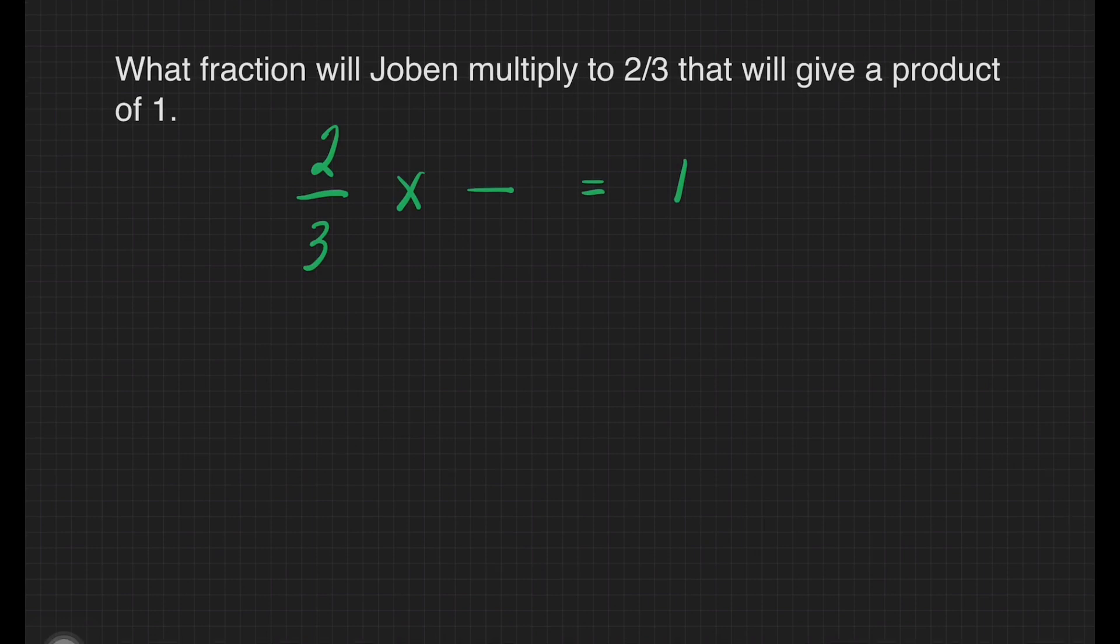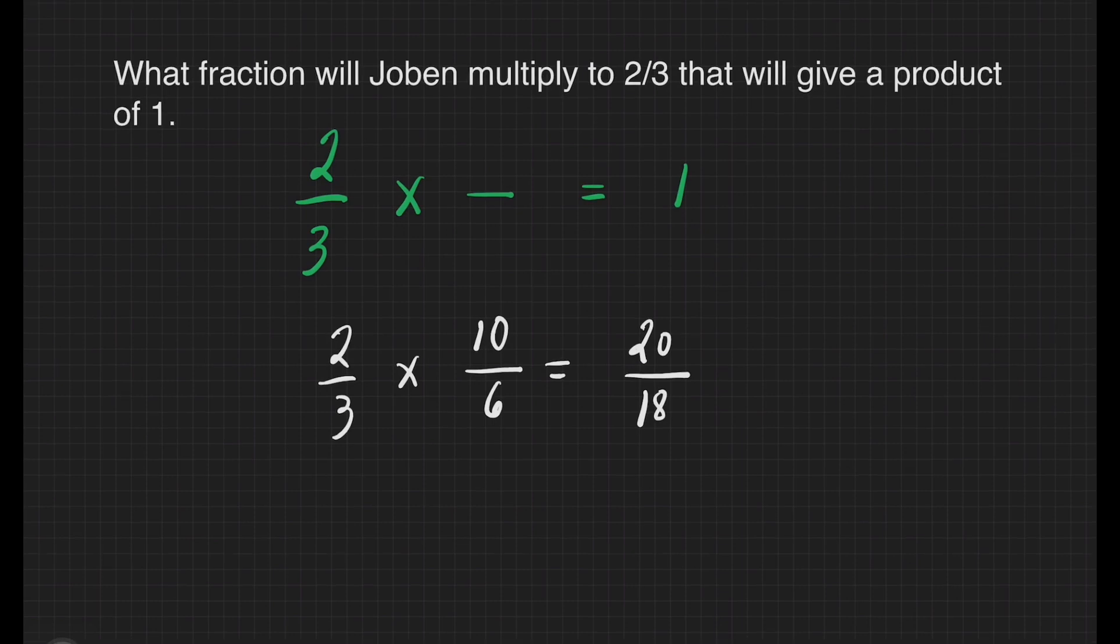Let us use trial and error method to answer this question. What if we will multiply 2/3 to 10/6? Will it give you a product of 1? We'll have it. 2 times 10 is equal to 20. 3 times 6 is equal to 18. This is not our answer because it is not giving us 1. We have to delete this one because this is not correct.